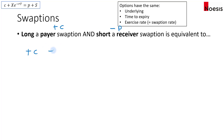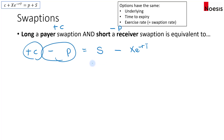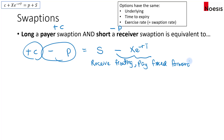So a long payer swaption and a short receiver swaption would be equivalent to the underlying minus the risk-free bond. In this case, a long payer swaption and a short receiver swaption is equivalent to receive floating, pay fixed — a forward swap. It is a forward swap because the swaption will expire at a future date, at which point, if exercised, the buyer of the option will enter into a swap. So the swap is entered into at a forward period, not today, but at a later date.